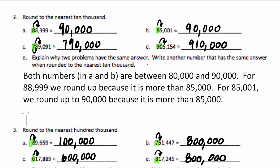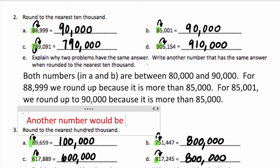We also need to write another number that has the same answer when rounded to the nearest 10,000. This number needs to round to 90,000, so I'm going to say 86,321 — it has eight 10,000s, which is 80,000, and the thousands digit has to be five or more, so it rounds up to 90,000.